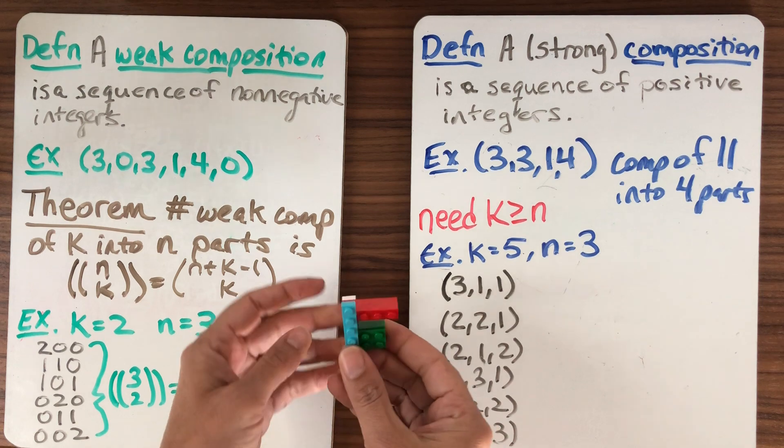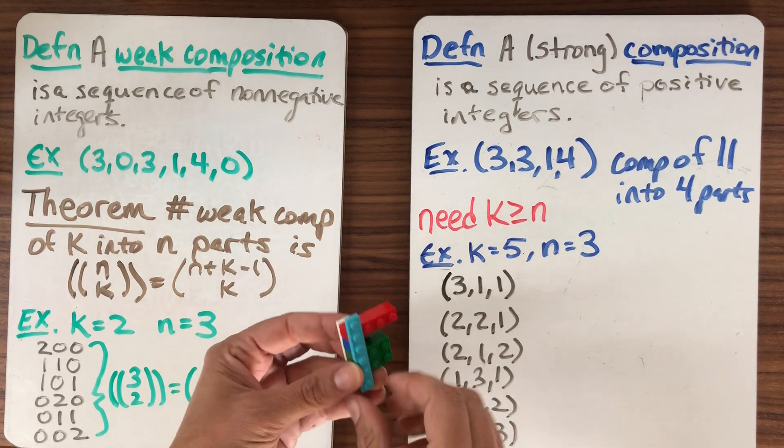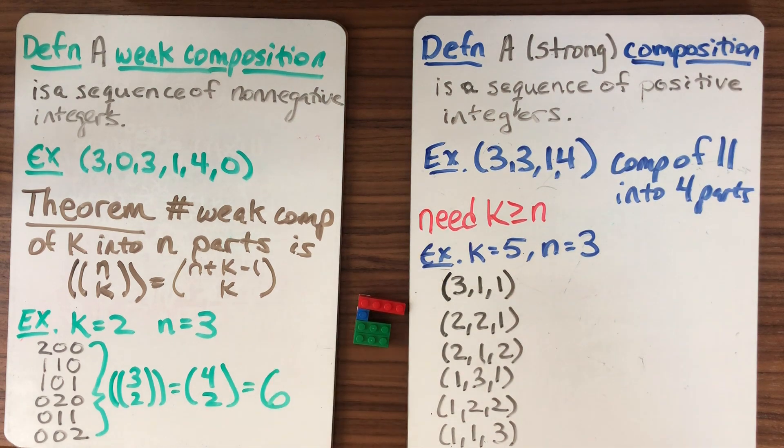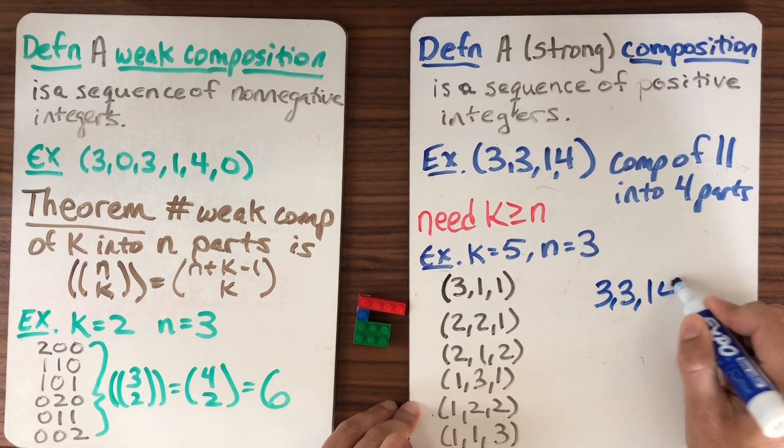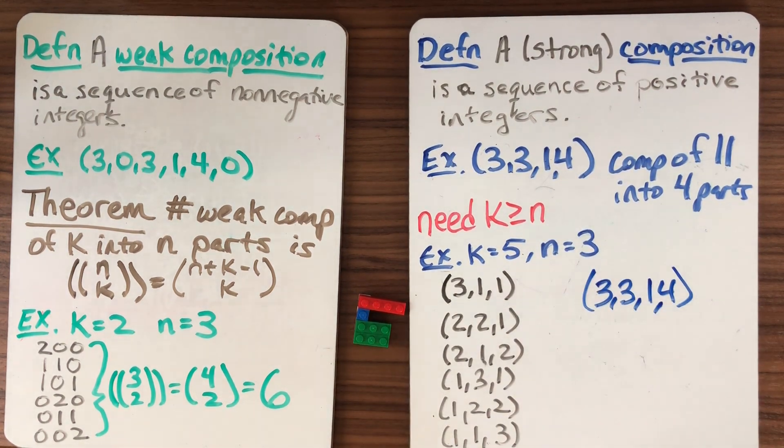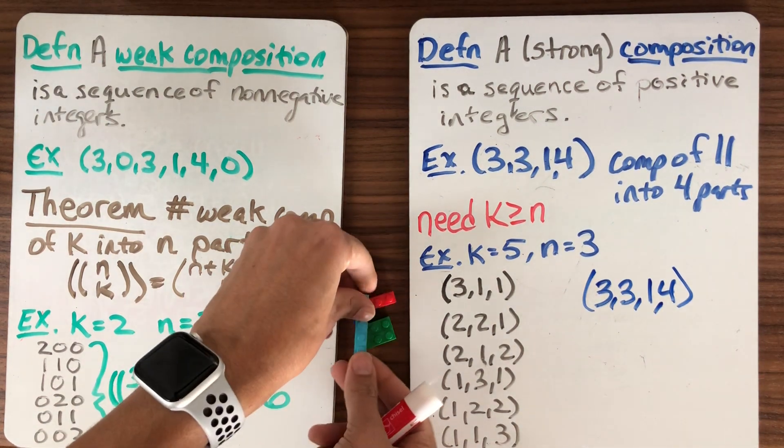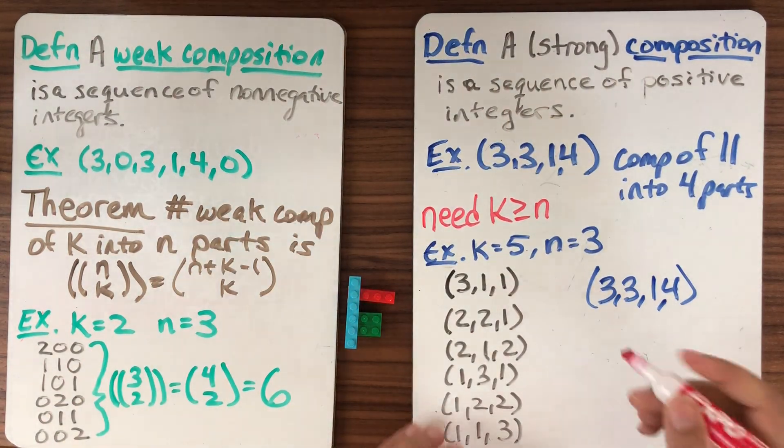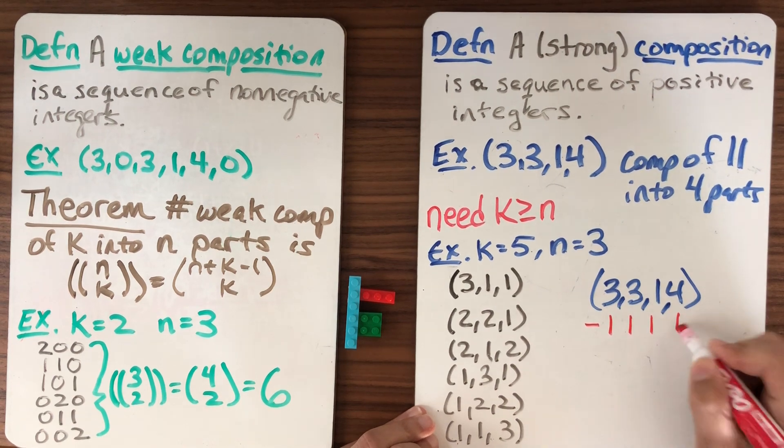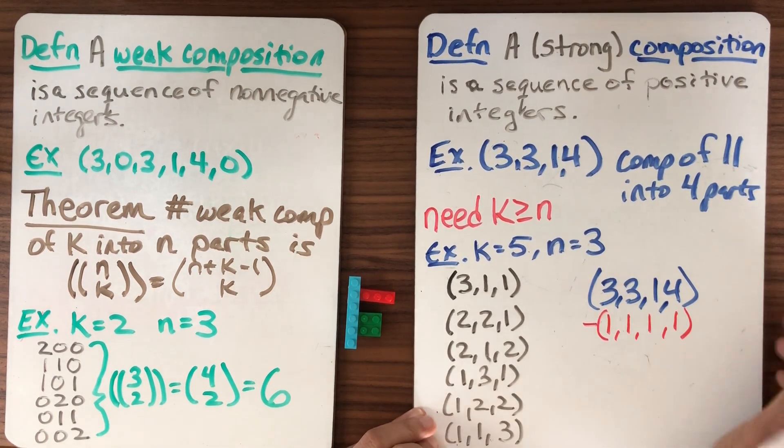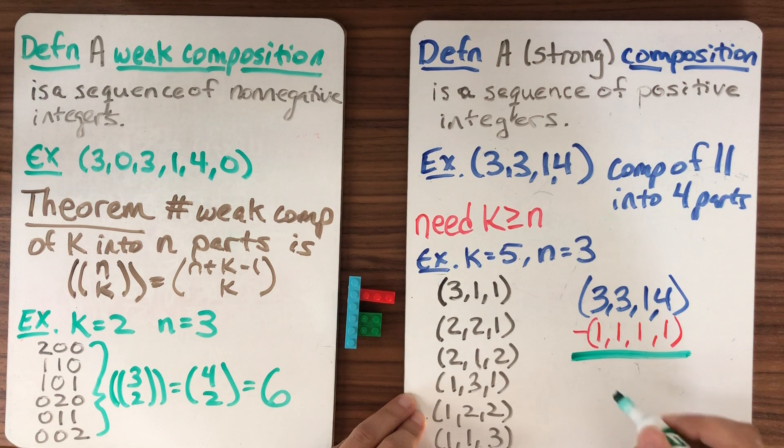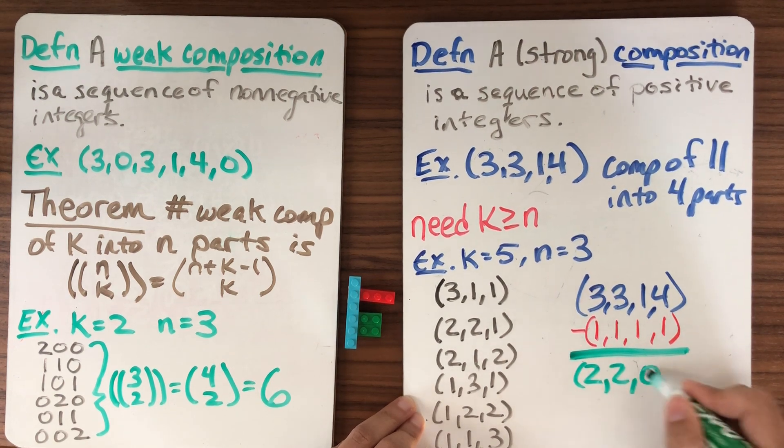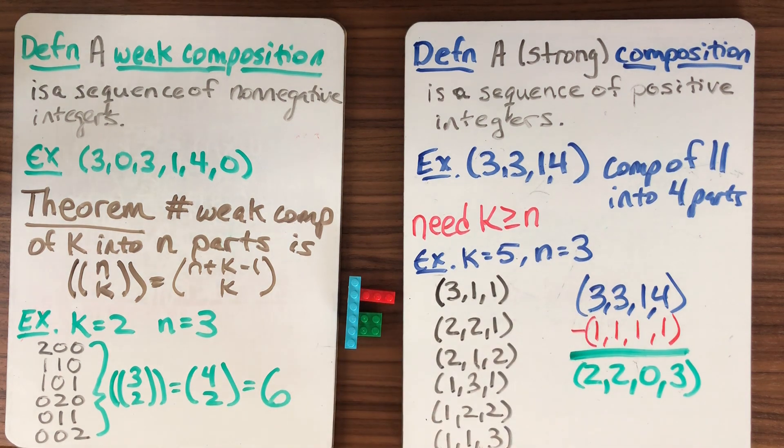One way I could do it is just by deleting this column. So I could take this strong composition that I have here, I'll write it again. I could take 3, 3, 1, 4. And I could think about deleting that column right here. It's a nice thing that I can visually see, even if I can't get the studs to line up. So what I'm doing, I'm subtracting one from every position. I can do that because these numbers are all positives. They're all at least one. And the result that I get, well I might end up with a zero. The result that I get is 2, 2, 0, 3.